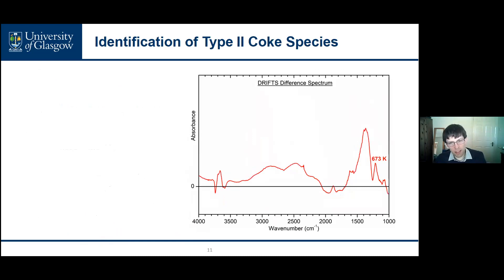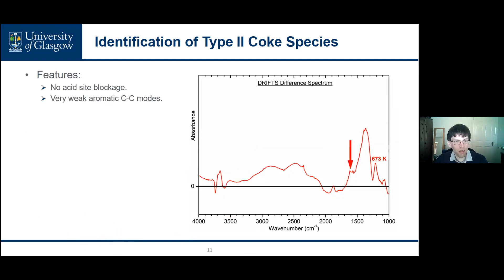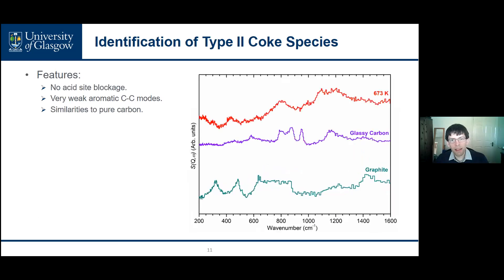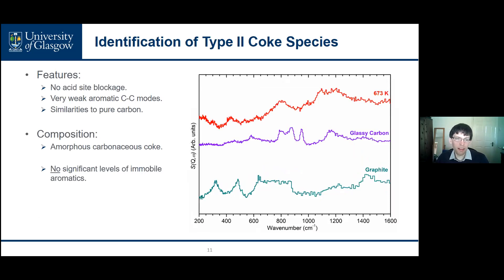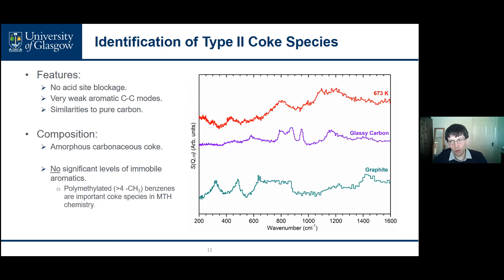The type two coke species, as typified by the results at 673 Kelvin, features a much reduced level of acid site blockage, very weak aromatic C-C modes, and the INS spectrum has a number of similarities to the spectra of pure carbon in its various forms. It can therefore be identified as an amorphous carbonaceous coke build-up on the catalyst surface. Significantly, there are no significant levels of immobile aromatic species such as penta- and hexamethylbenzenes in the type two coke, which do form important coke species in methanol to hydrocarbons chemistry over ZSM-5 as reported in the literature.